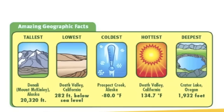On the western coast, there's another area called Death Valley, which is in California. It has the distinction of two facts: first, it is the lowest place in the United States, at 282 feet below sea level. It is also the hottest place in the United States, where temperatures can easily reach 134.7 degrees Fahrenheit. Another geographic place to note is Crater Lake, Oregon, also on the western part of the United States, and it is the deepest place in our country — the lake is 1,932 feet deep.